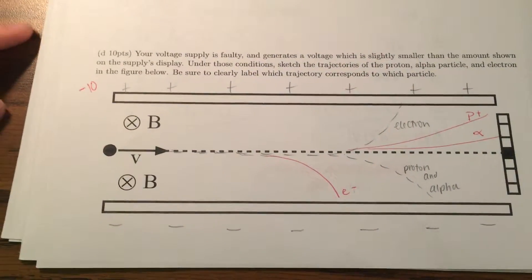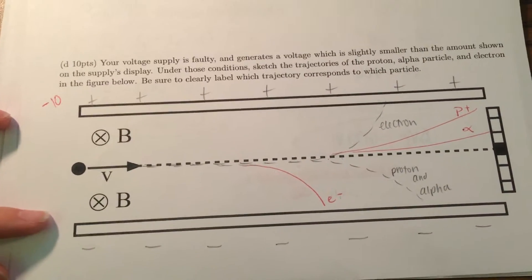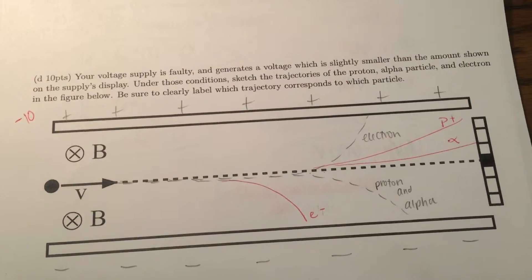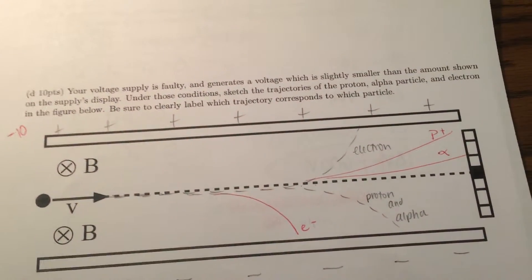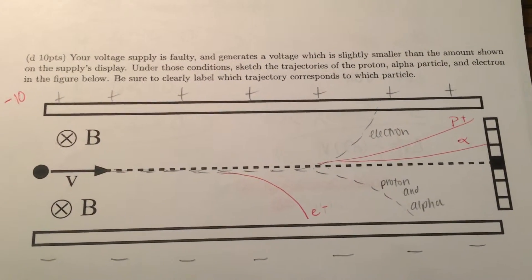So, I already knew that the top plate is positively charged, and the bottom plate is negatively charged. That doesn't change, but if the voltage supply is smaller than is shown on the display, then that means the electric force is smaller.